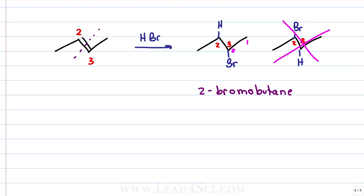Given that we have symmetry in the molecule, it didn't matter where we put the bromine. But what happens if we try to do the same reaction with an asymmetrical starting alkene, where the pi bond sits between carbons 2 and 3, where carbon 2 is a tertiary carbon and carbon 3 is a secondary carbon?